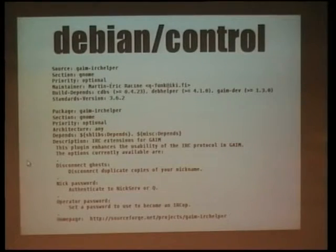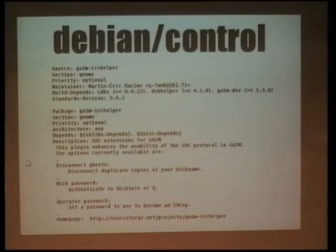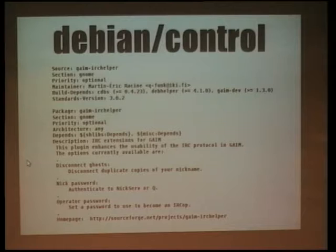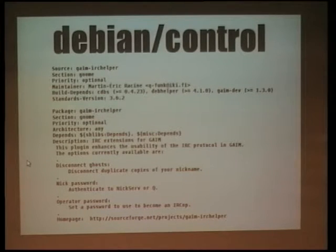The next file, also very important, is the control source control file. This tells you the name of the source package, what type of package it is — in other words what section we're uploading it to — and the priority. I'll briefly discuss section and priority because those two are sometimes misunderstood. Section basically informs you as to what type of application we're dealing with. In this case, since gaim is a GNOME application, logic would have it the plugin designed for it would most likely go in the GNOME section.